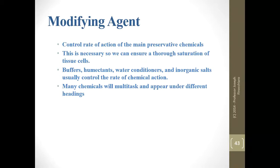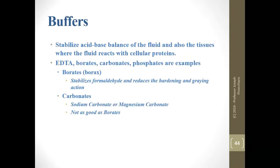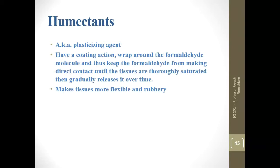A modifying agent controls the rate of the main preservative chemical — reducing or speeding it up. Buffers, humectants, water conditioners, and inorganic salts usually control the rate of chemical action. Buffers stabilize the acid-base balance of the fluid and tissues. EDTA, borate, carbonate, and phosphate — anything ending in '-ate' — is generally a buffer. Borates are the best buffers. Humectants are plasticizing agents with a coating action. They wrap around the formaldehyde molecule, keeping it from making direct contact with tissues until they're thoroughly saturated, then gradually release it over time, making tissues more flexible and rubbery.